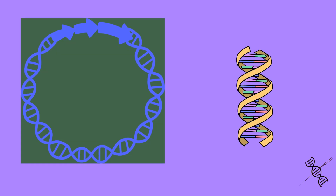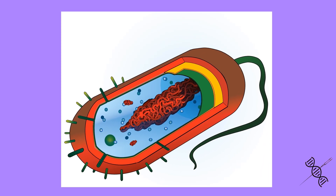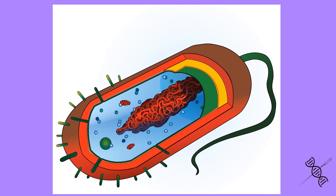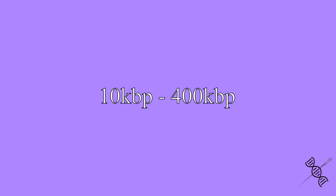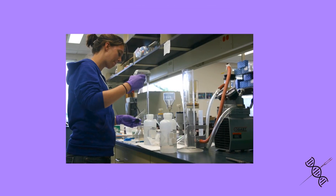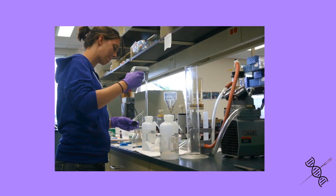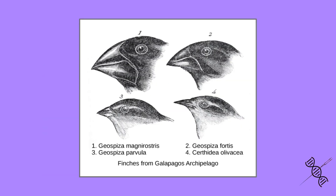The main distinction between a plasmid and a linear piece of DNA is that a plasmid has a circular shape made out of double-stranded DNA. It mostly occurs in bacteria, divided separately from chromosomal nuclear DNA. It is also quite small compared to chromosomal DNA, ranging from 10 kilobase pairs to 400 kilobase pairs. The term plasmid was first used in 1952 by Joshua Lederberg, describing any type of genetic material functioning separately from the cell nucleus, and has become particularly prominent as a scientific tool in molecular biology and genetics.